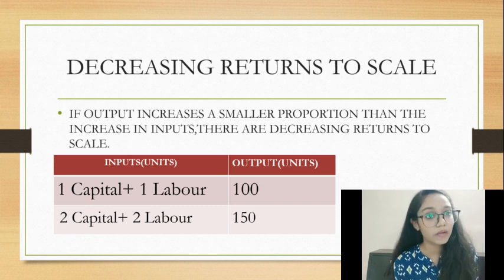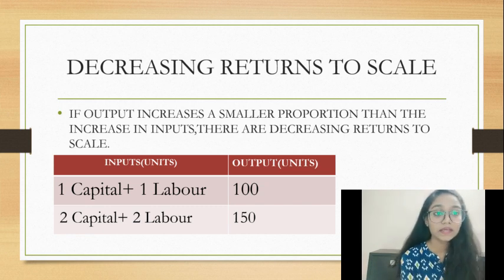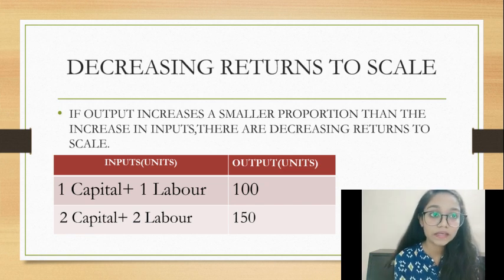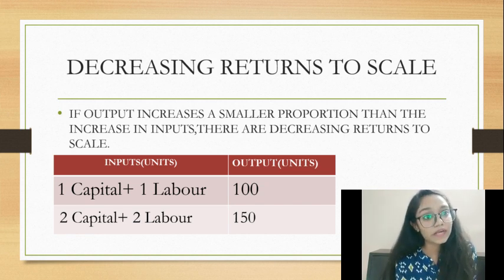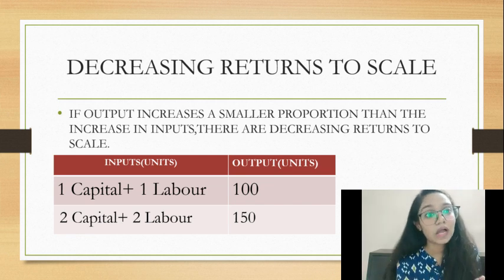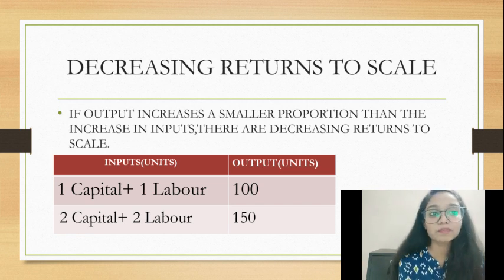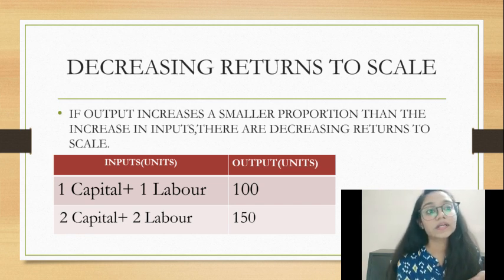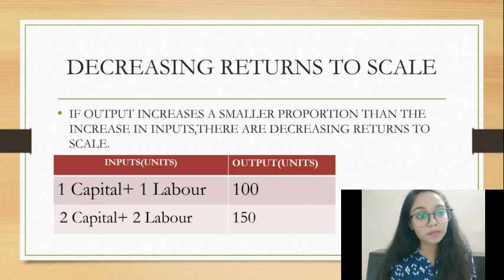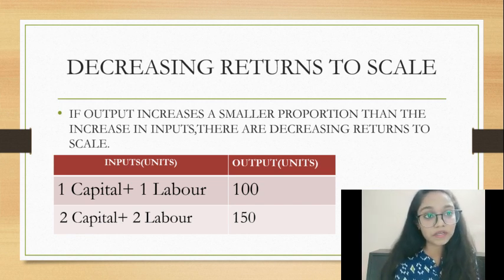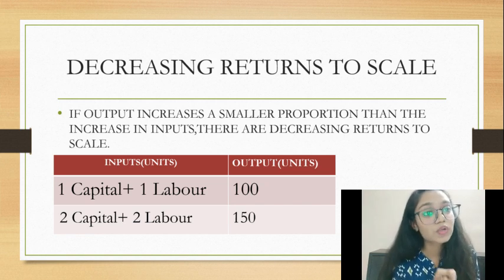For example, with 1 capital plus 1 labor we have 100 units, and with 2 capital plus 2 labor we have only 150 units. The input increased by 100% but the output increased by only 50%. So if output increases in a smaller proportion than the increase in input, that is called decreasing returns to scale.